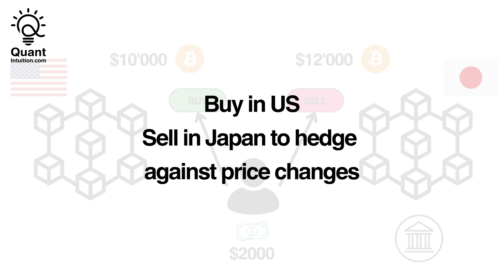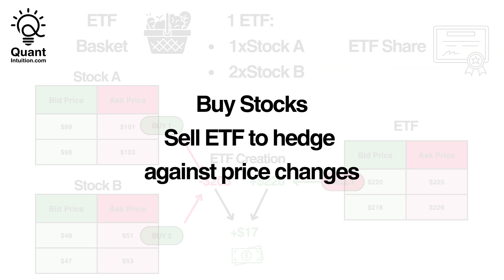In the case of the ETF arbitrage from the previous video, we bought many different stocks and then immediately sold a share of the ETF itself to hedge against price changes in those stocks. Here again, our goal was to make money through the opportunity in the order book and we did not want to actually trade any stocks.